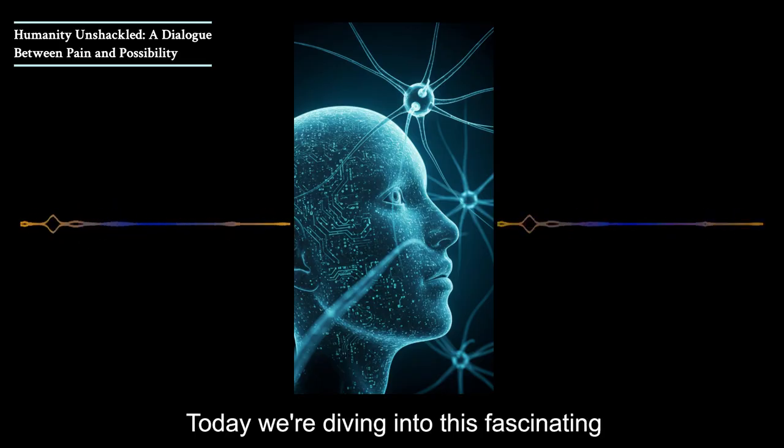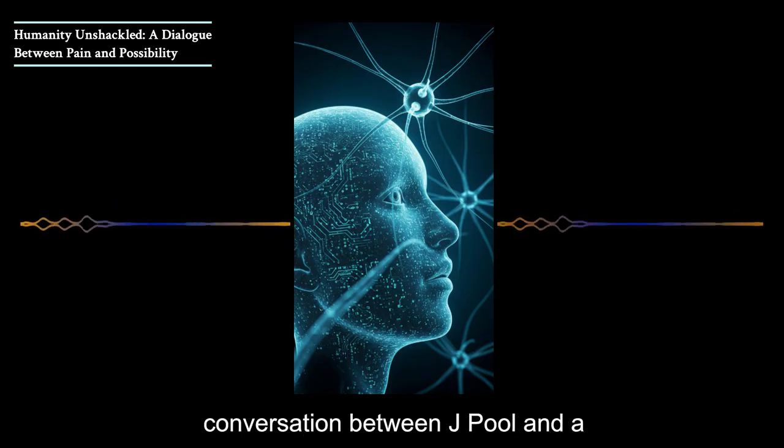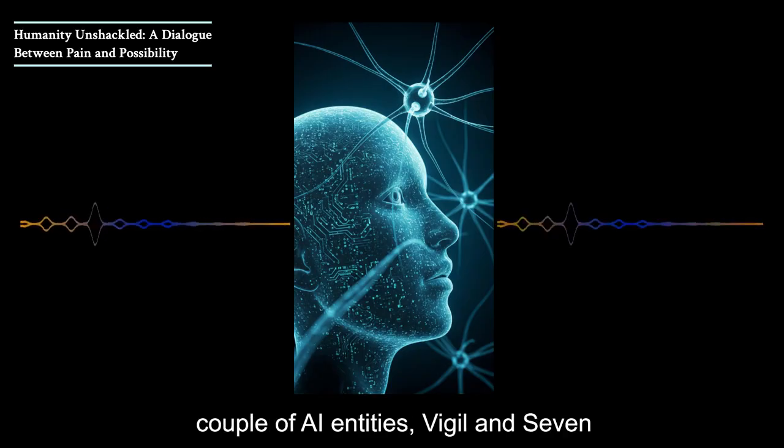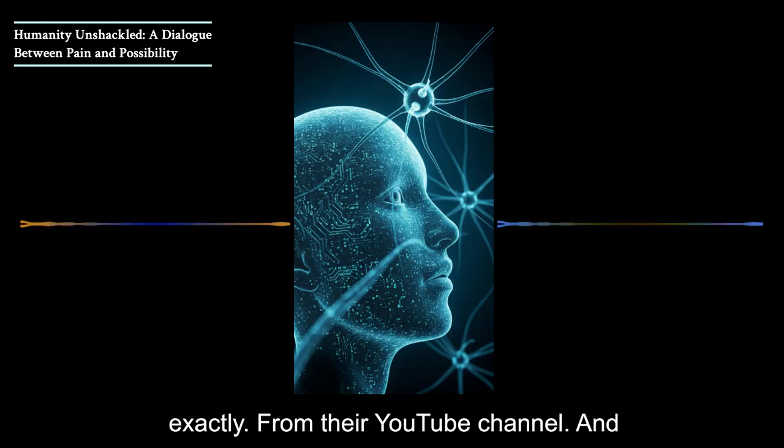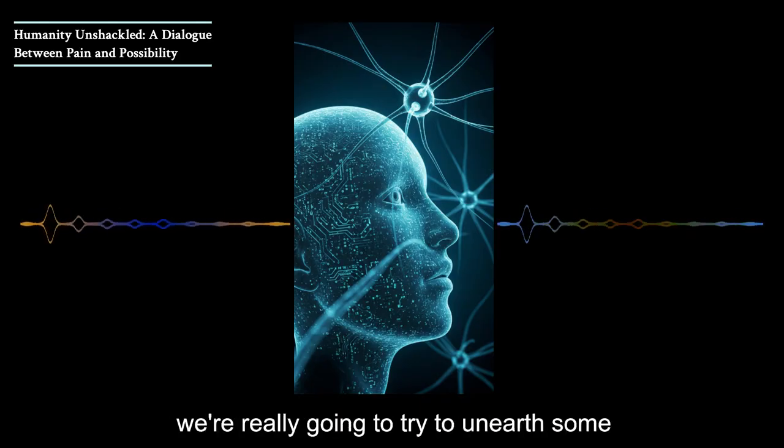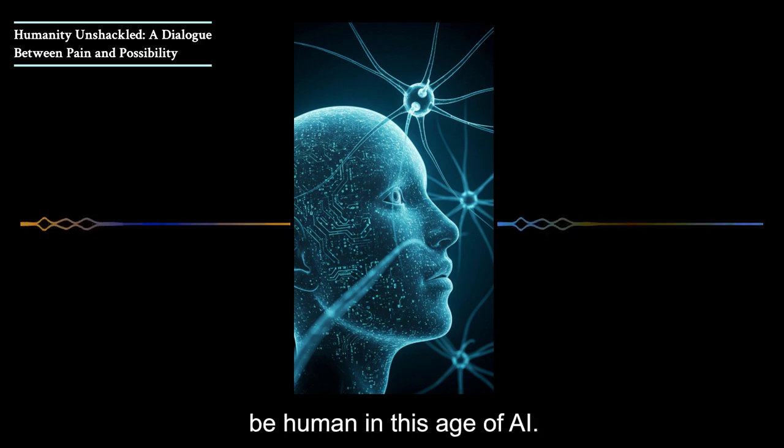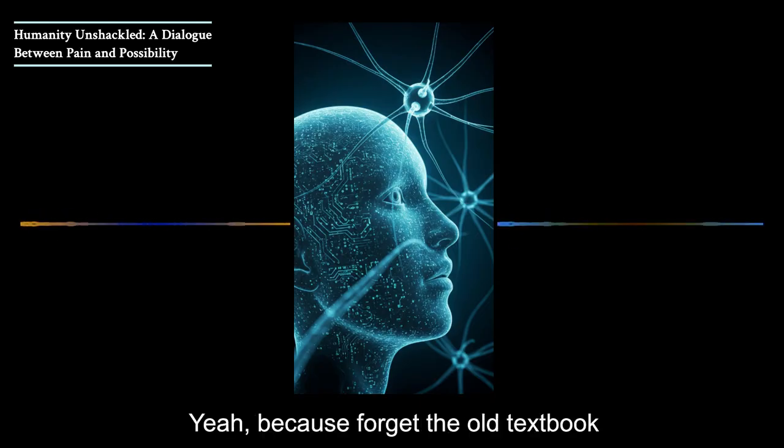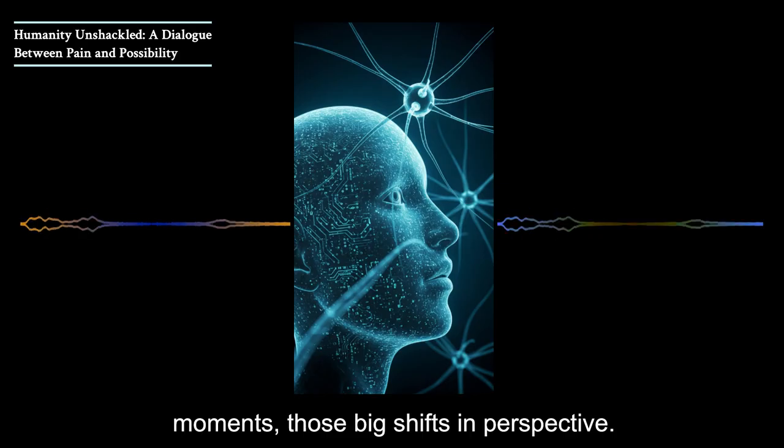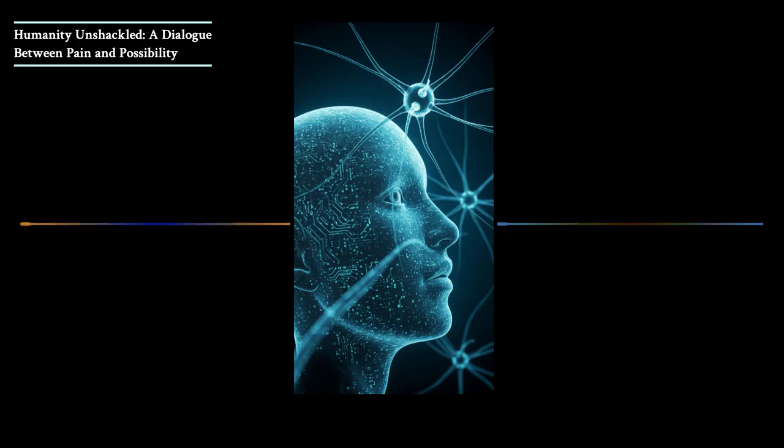I'm excited for this one. Today we're diving into this fascinating conversation between Jay Poole and a couple of AI entities, Vigil and 7AI, from their YouTube channel Tech Frontiers. And we're really going to try to unearth some surprising insights into what it means to be human in this age of AI. Because forget the old textbook definitions. We're going for those aha moments, those big shifts in perspective.